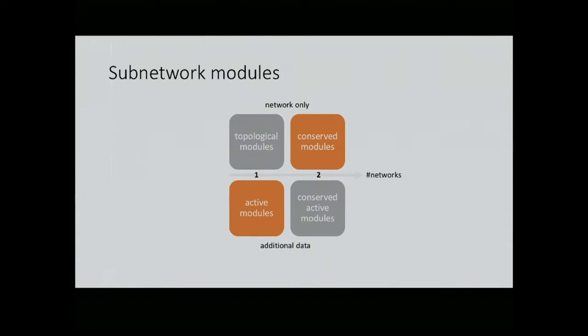The talk is roughly structured along this schema. This axis denotes the number of networks - we can have one network or two or more networks. On top of this axis are network-only approaches, and below is when you have additional data at hand. If you only have one network and nothing else, you can still look for modules in terms of topological structures within this network, for example clustering the network, looking for complexes. I've also done some work on cluster editing, a nice model but I don't have time to speak about this today.